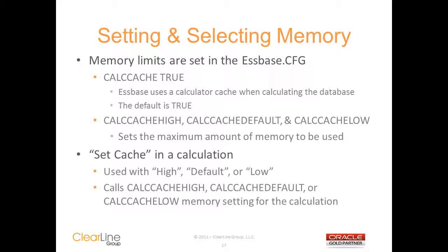You'll need to make sure that you've set up your S-Base configuration file to use the calc cache. The configuration file can turn the calc cache on and off, and also defines how much memory is available for the calc cache. Make sure that you either have calc cache true or no calc cache entry in your configuration file — you do not want to see calc cache false in it. If there's no entry, it'll still work because the default is true. You should also see calc cache high, calc cache default, and calc cache low in your configuration file. They set the maximum amount of memory that can be used for the calc cache and are called by the set cache command — high, default, and low — in your calc script or business rule.